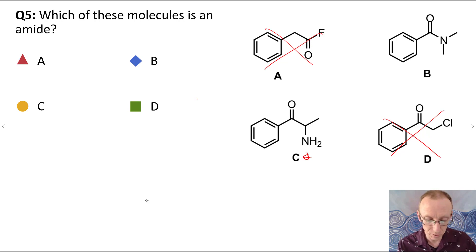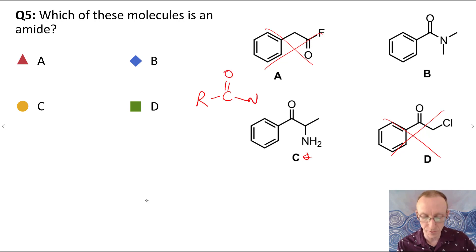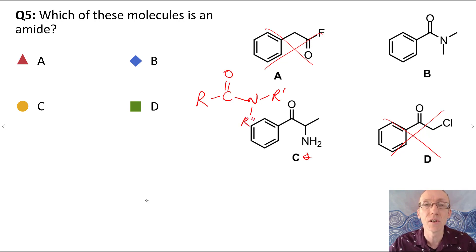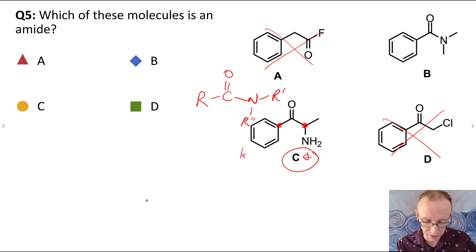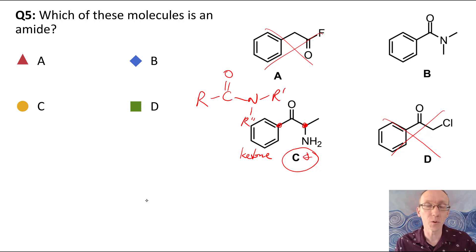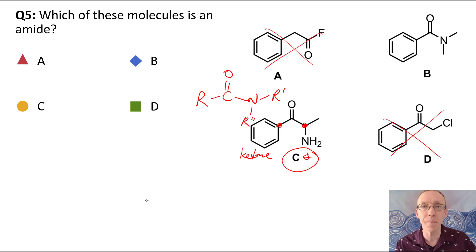However, for a molecule to be an amide, we must have the acyl carbon directly bonded to a nitrogen that then has some other groups bonded to it — normally either hydrogens or carbon-based alkyl or aryl groups. C has two R groups bonded to the acyl group. So that's actually a ketone that happens to have an amine functional group within the molecule as well — an amino ketone, but not an amide.